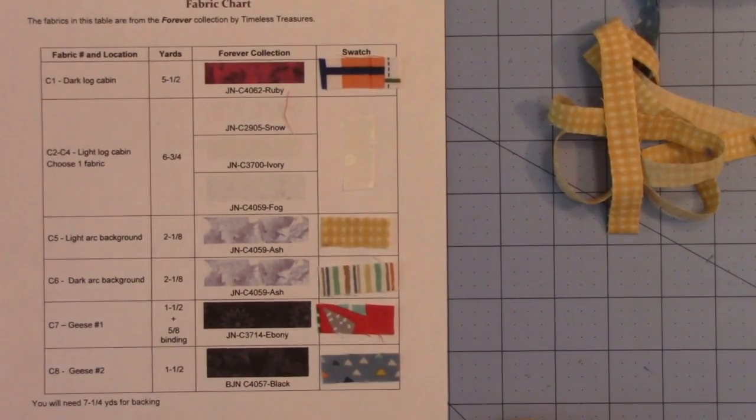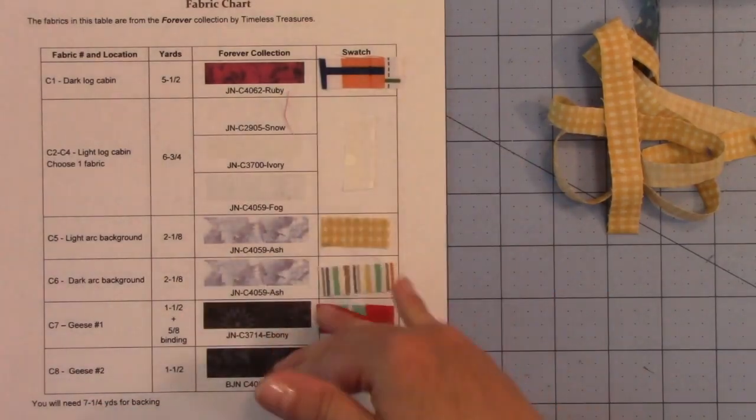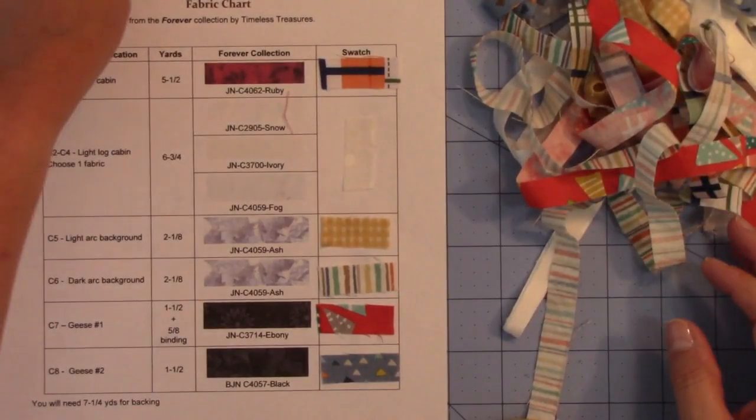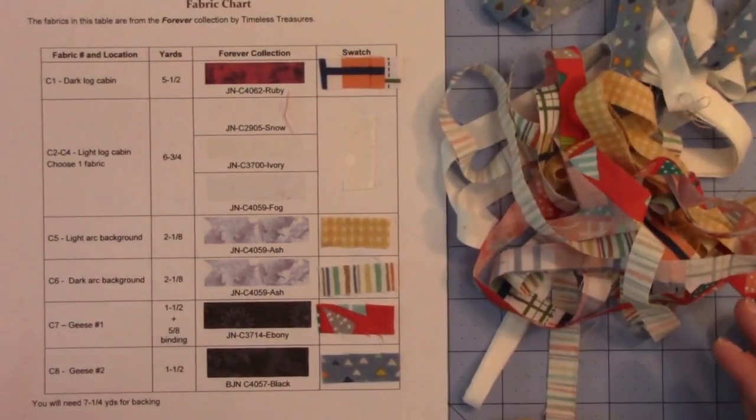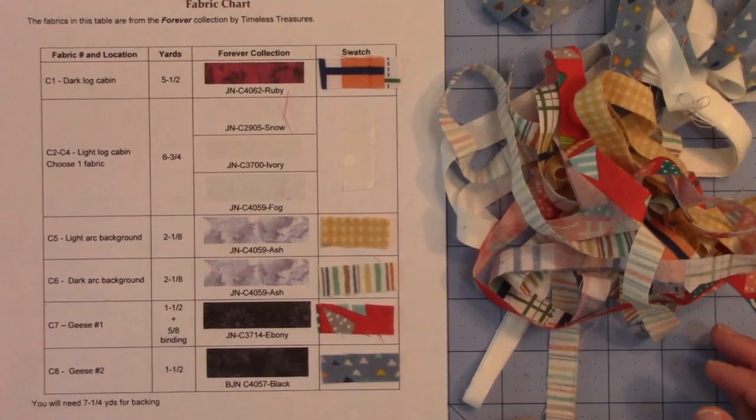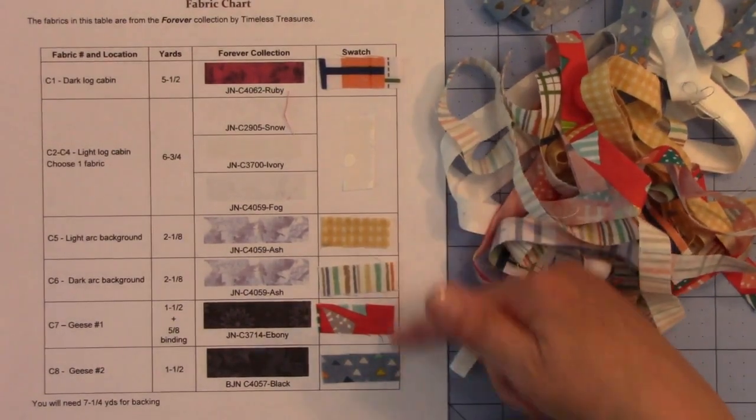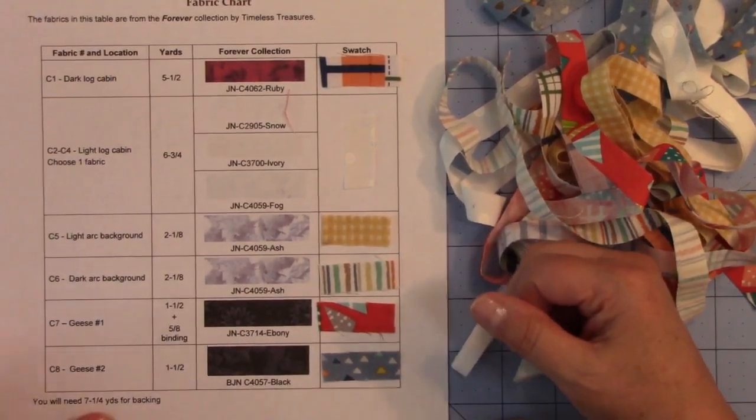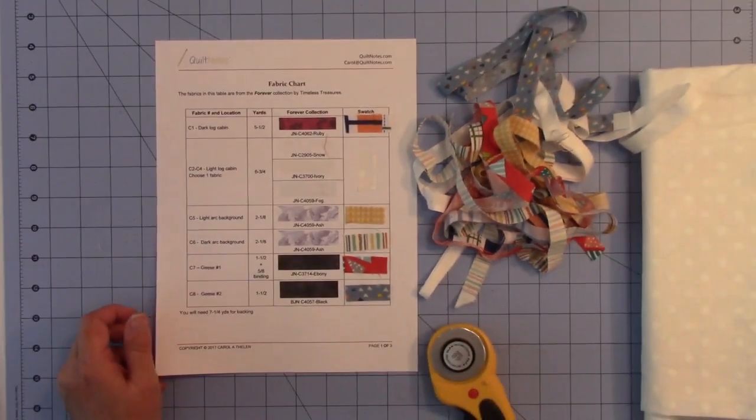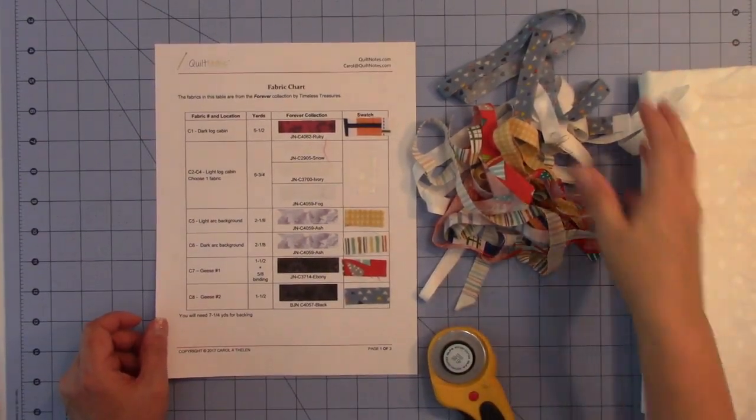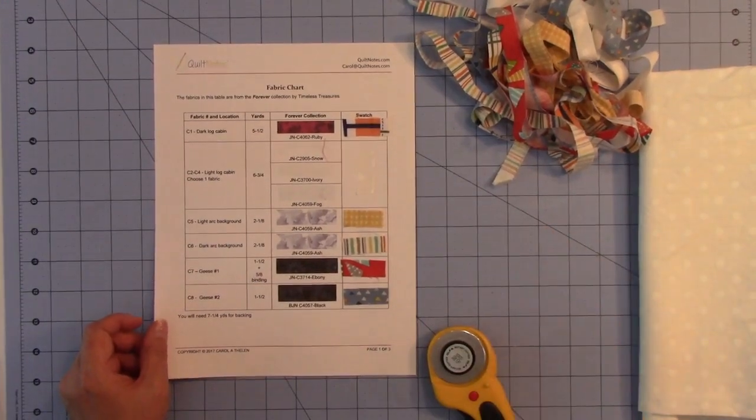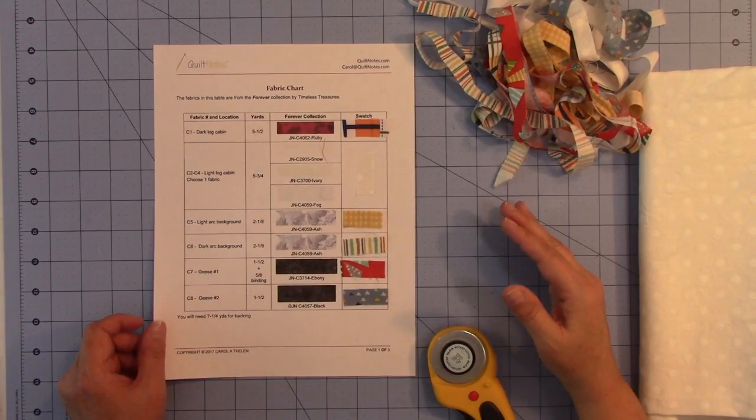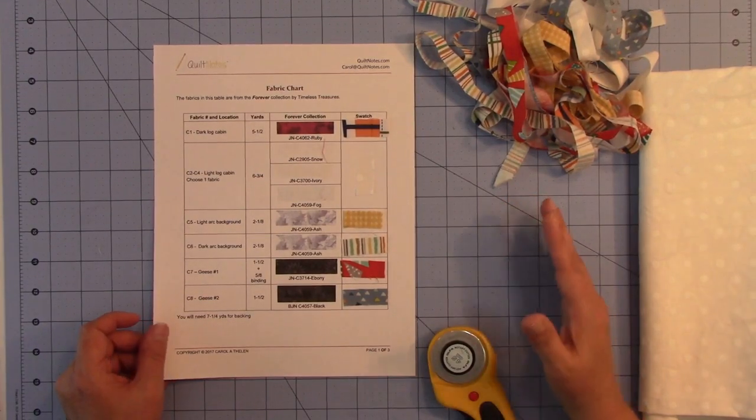Also, once you finish putting these swatches here, save these swatch strips. Later on, we'll be using them, if you want, to glue them onto your papers, so you can keep track of your flying geese. Especially in this section here when we're doing the flying geese, it might be easy to get those confused, especially at the beginning. So go ahead and purchase your fabric, cut off the swatches as soon as you get them home, and put them in your swatch chart. And if you are going to pre-wash your fabrics, then pre-wash this.